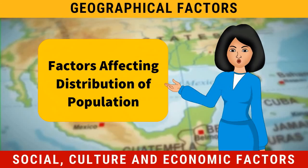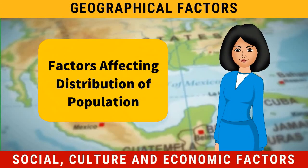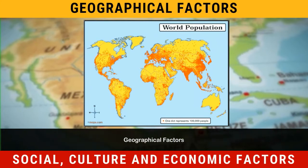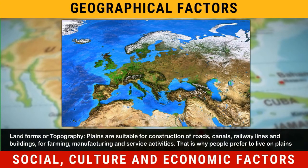Factors affecting distribution of population. Distribution of population is mainly affected by geographical, social, cultural and economic factors. Geographical factors: Landforms or Topography. Plains are suitable for construction of roads, canals, railway lines and buildings, for farming,